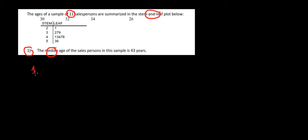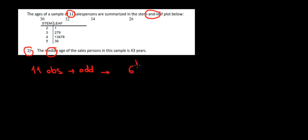We know that we have 11 observations, which is an odd number, meaning that the median is going to be the middle observation, which is going to be the sixth observation.